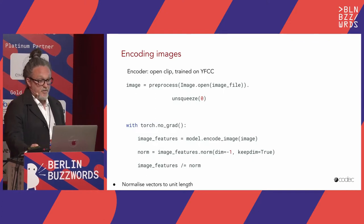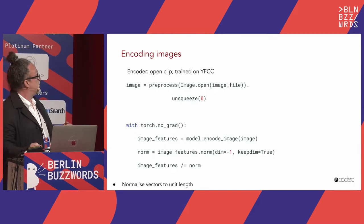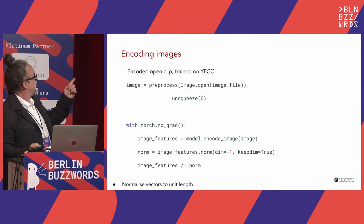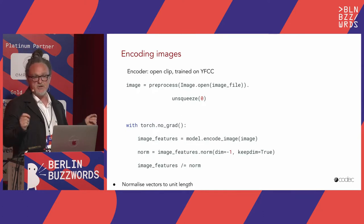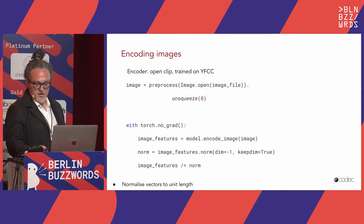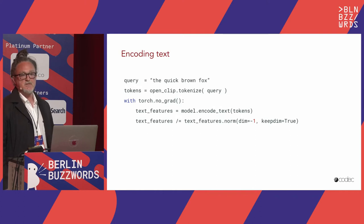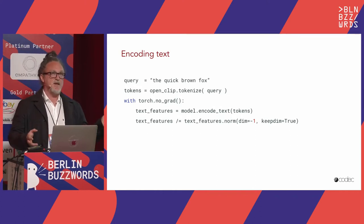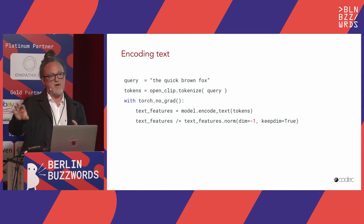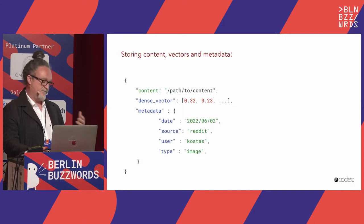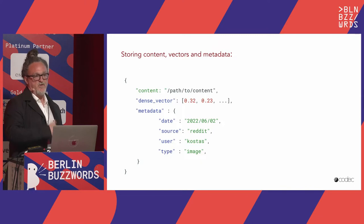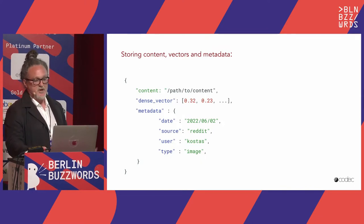Using OpenCLIP, it's completely straightforward to encode an image and get back a vector. You use the pre-process function, open the image, pass it through the encode-image function, and get back a vector, which you then normalize to ensure unit length. You repeat the same for text. Now you have a system that can take any text or image and project all content into the same vector space. You also store content metadata like date, source, and so on, for post-filtering — similar to what you'd do in Elasticsearch.